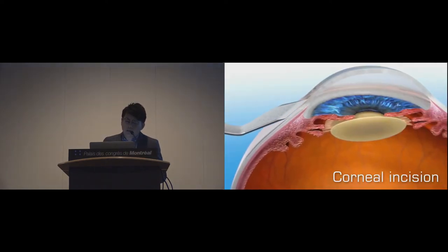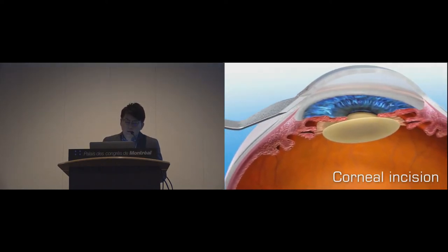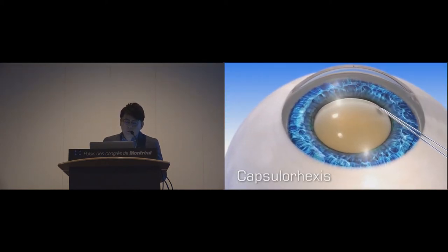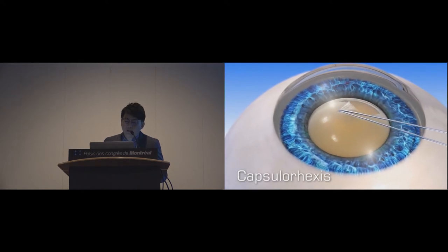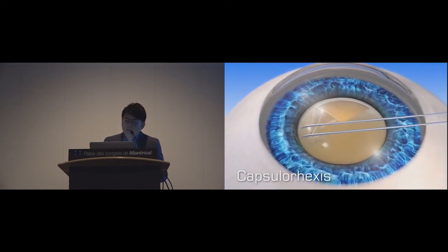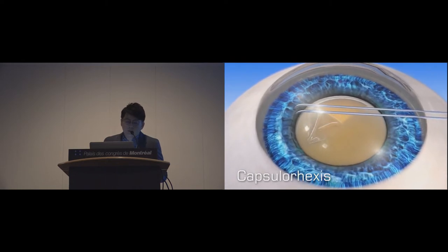Here's the first two steps of cataract surgery. First, we have to create a cornea incision wound. Second, surgeon will use forceps to tear a circular opening on the lens capsule. This is so-called capsulorhexis and is the most difficult step of cataract surgery.